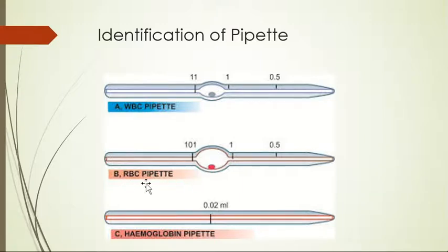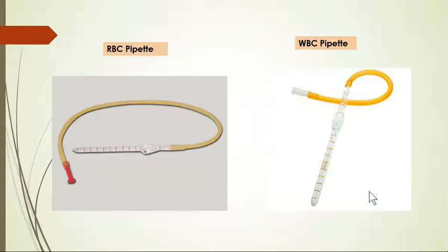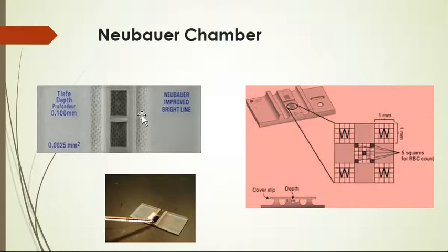More dilution is required in RBC so we have 101 marking for 200 times dilution. Don't be confused about the color of rubber tubing - it's not necessary that it will be red always for RBC because these can be interchanged easily. The identifying features are red bead with 101 marking for RBC, white bead with 11 marking for WBC.